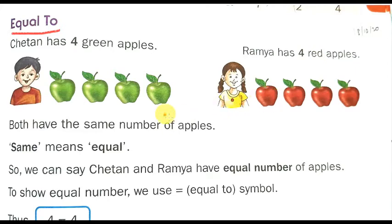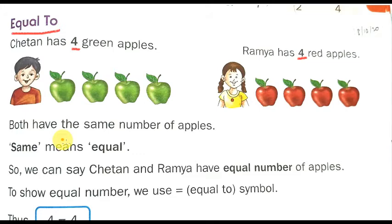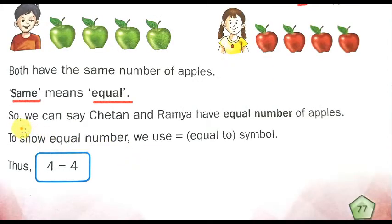What does it mean? Both have the same number of apples. Ramya has four red apples and Chetan has four green apples. Both have the same number of apples. Same means equal. So we can say Chetan and Ramya have an equal number of apples.